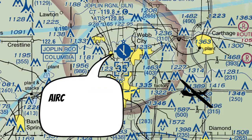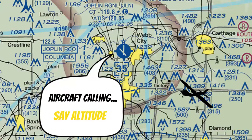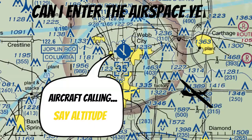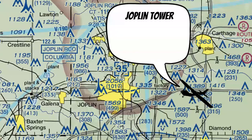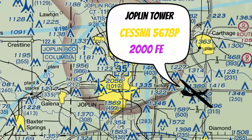ATC responds: "Aircraft calling, state altitude!" I forgot to tell them my altitude. But first — can I enter the airspace yet? Nope, not yet. They haven't said our call sign. So I respond: "Joplin Tower, this is Cessna 5678 Papa at 2,000 feet."